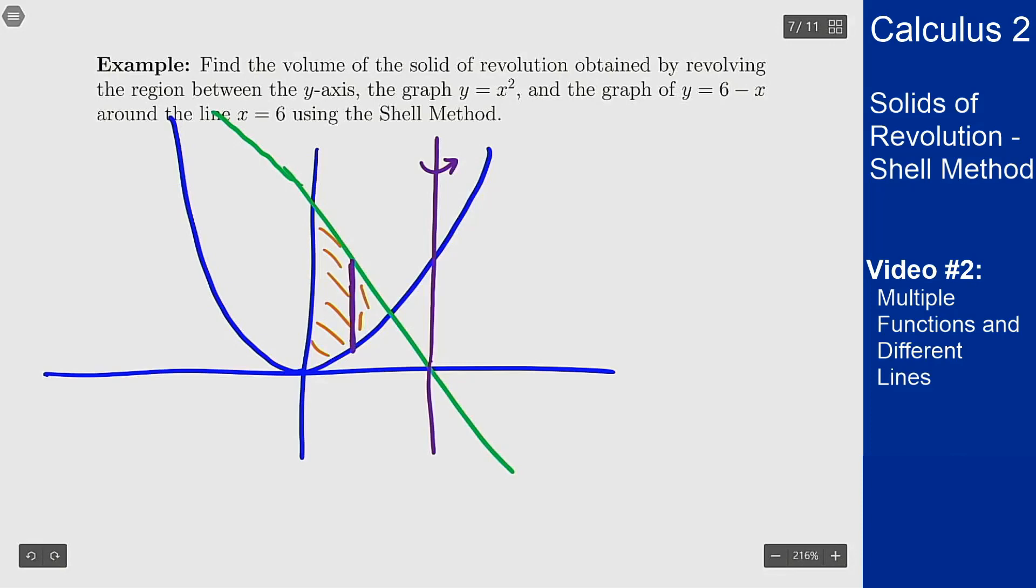Let's do the bounds first. Clearly I have x equals 0 as one bound of integration. The other one should be where these two curves cross. x squared equals 6 minus x, and this polynomial factors, so they cross at x equals 2. The minus 3 is on the other side, so I don't care about it. So there's my limits of integration.